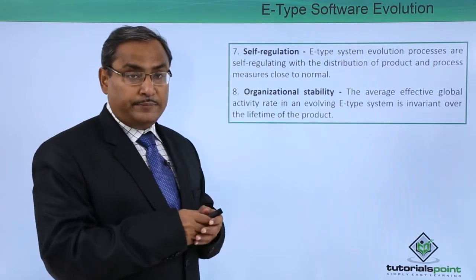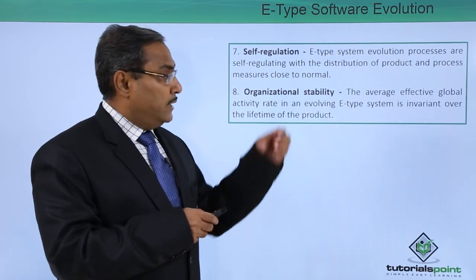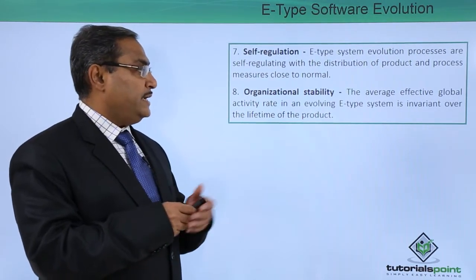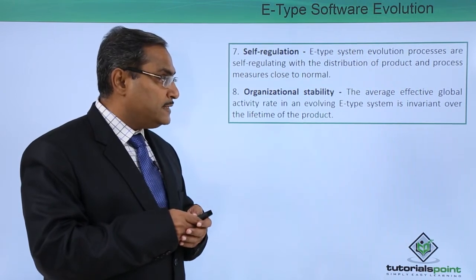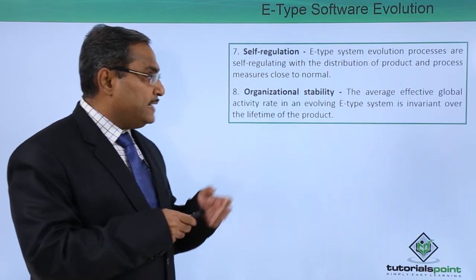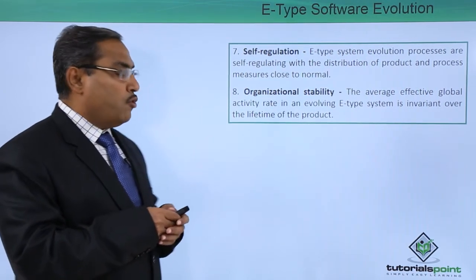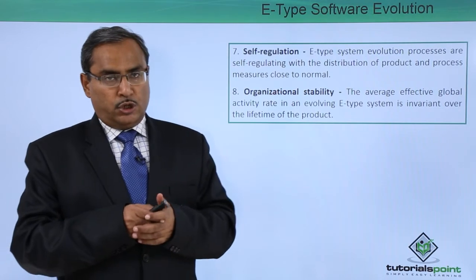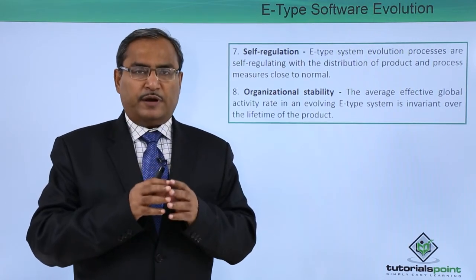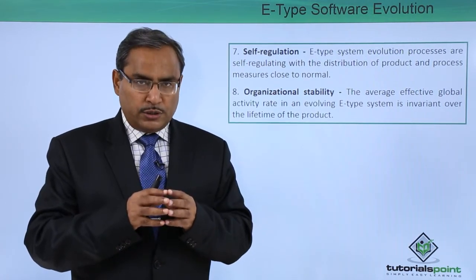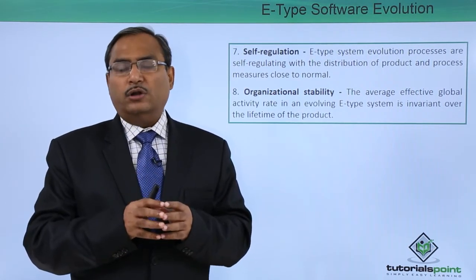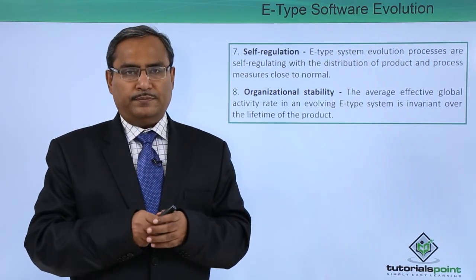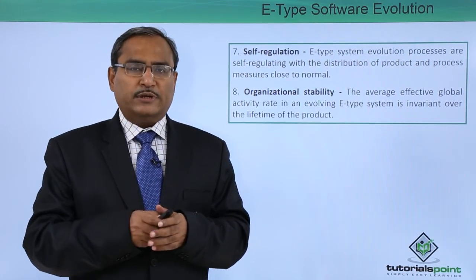The eighth law is organizational stability. The average effective global activity rate in an evolving E-type system is invariant over the lifetime of the product. These are the eight different laws Lehman suggested on E-type software evolution. Thanks for watching this video.